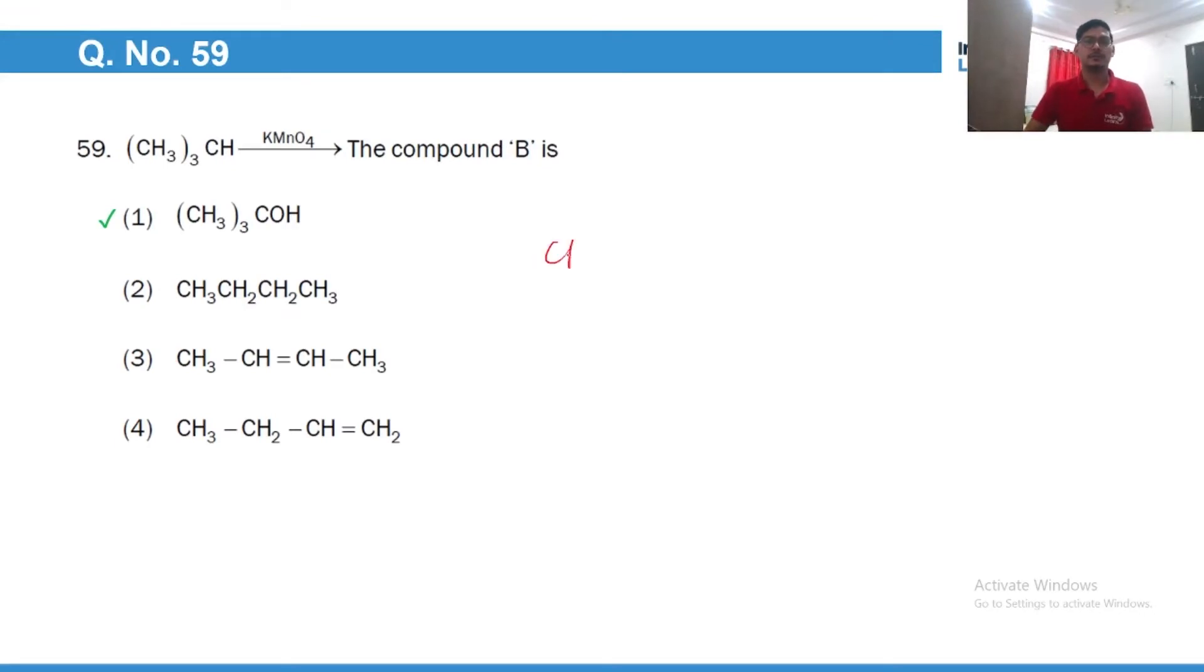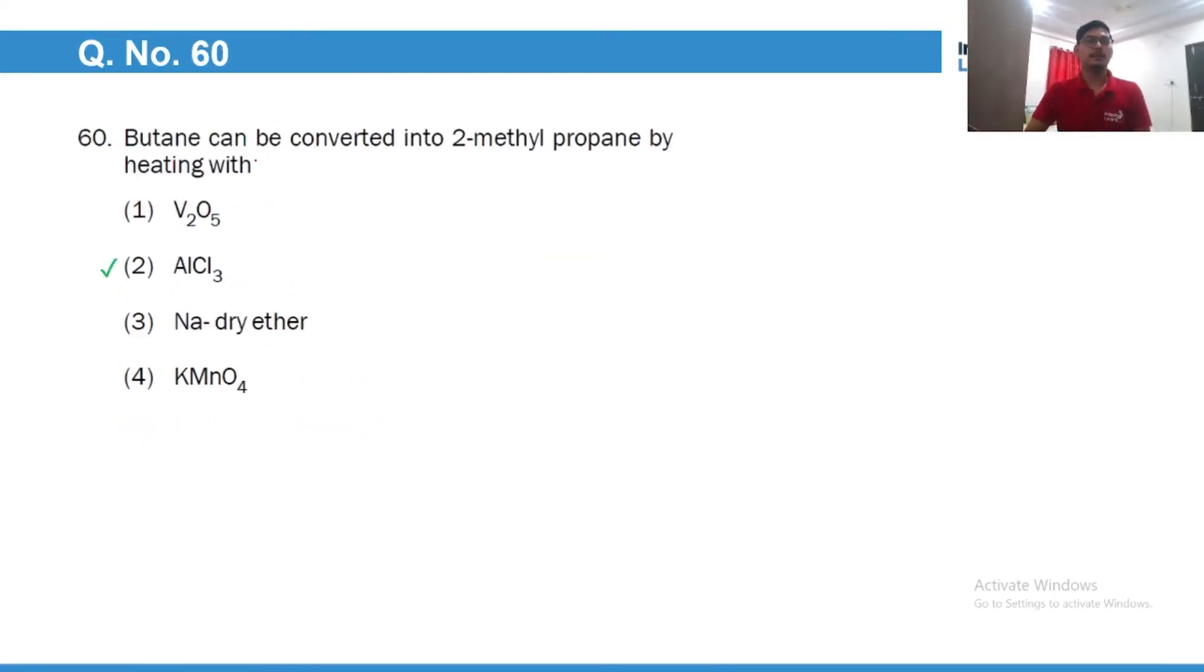Tertiary carbon is most easily oxidizable, so this carbon will undergo oxidation to give you tertiary alcohol. So this would be the correct answer. Butane can be isomerized to 2-methyl-propane in presence of AlCl3.